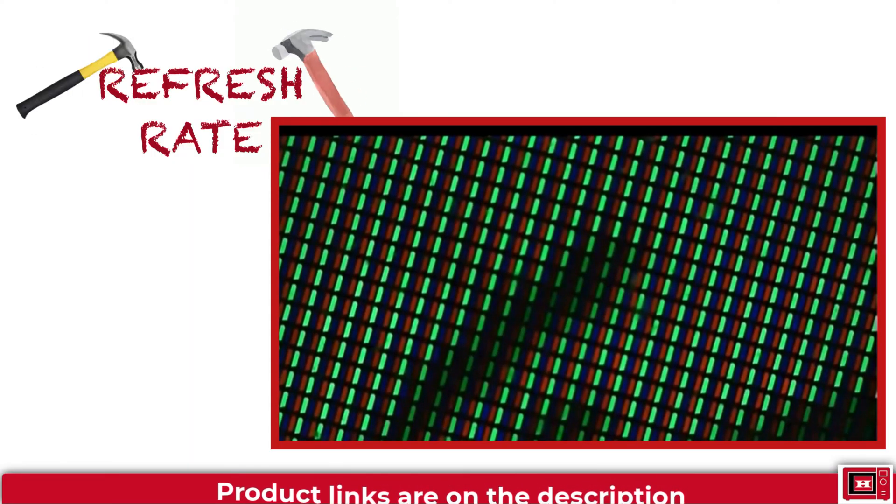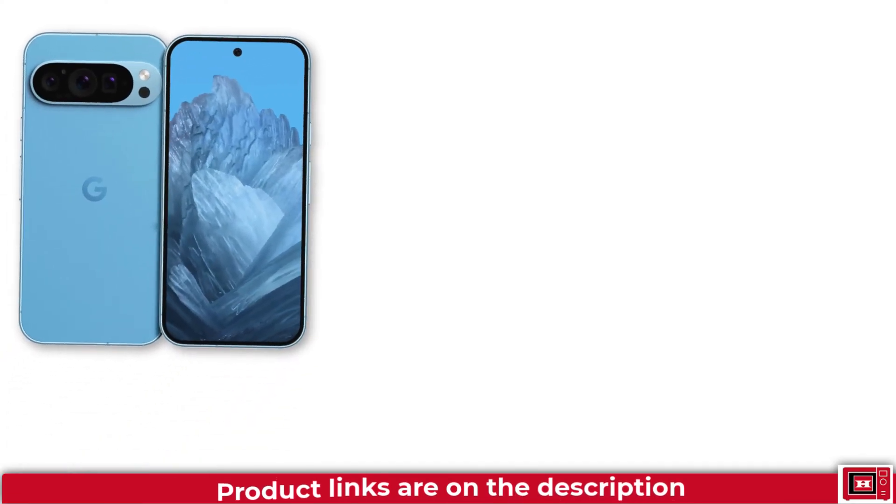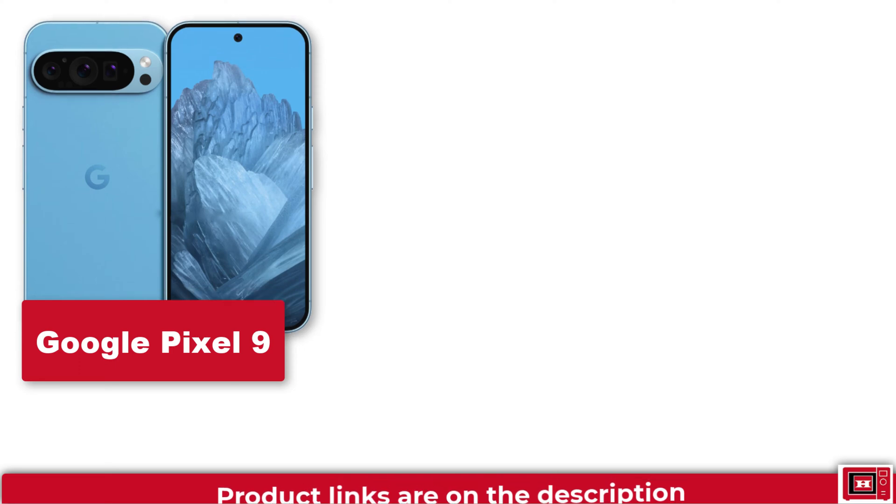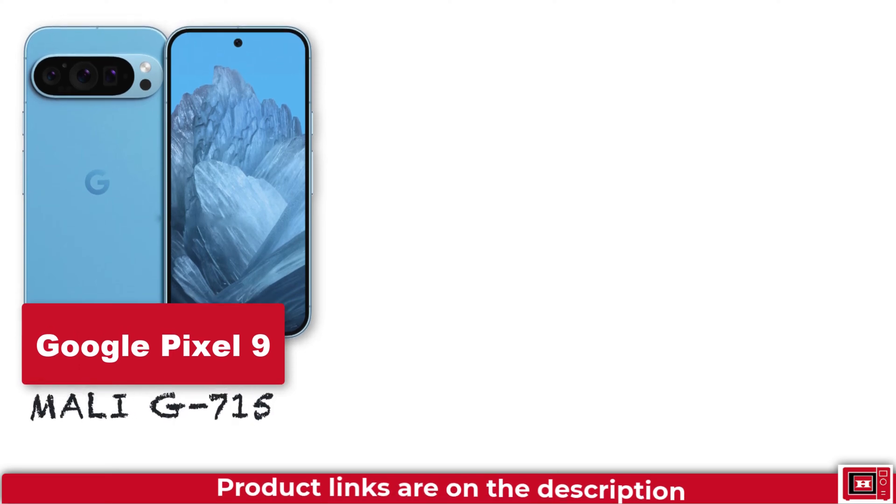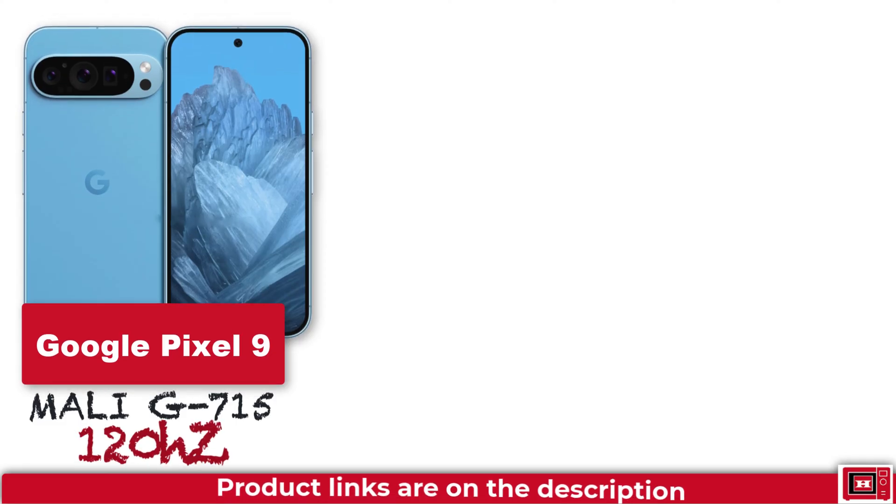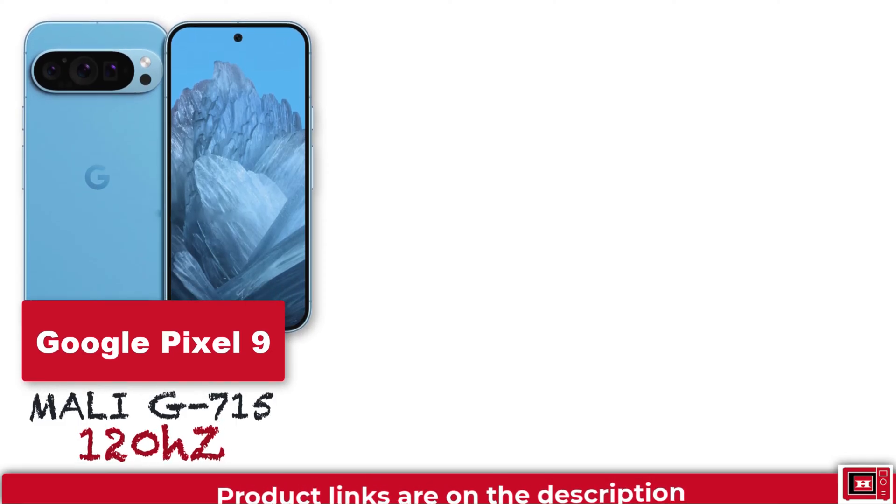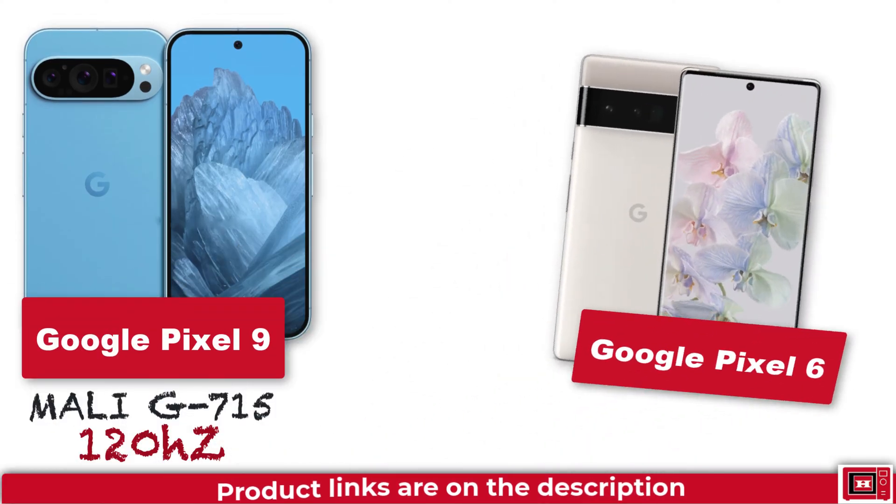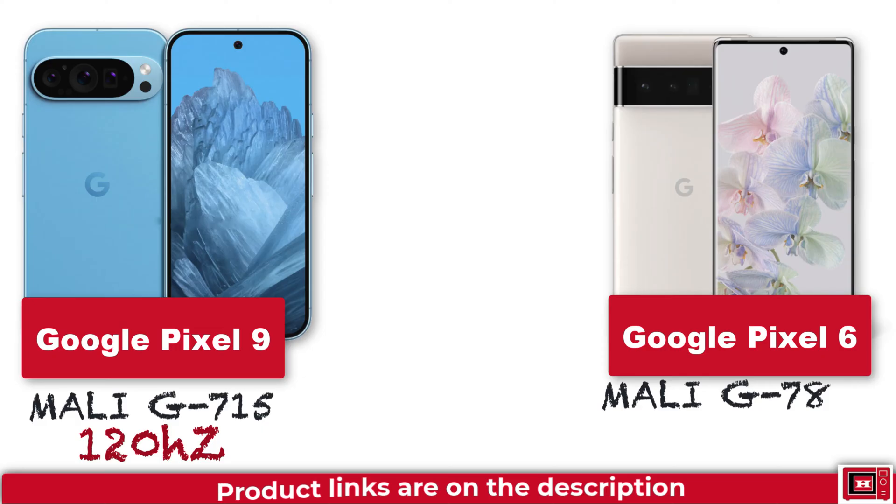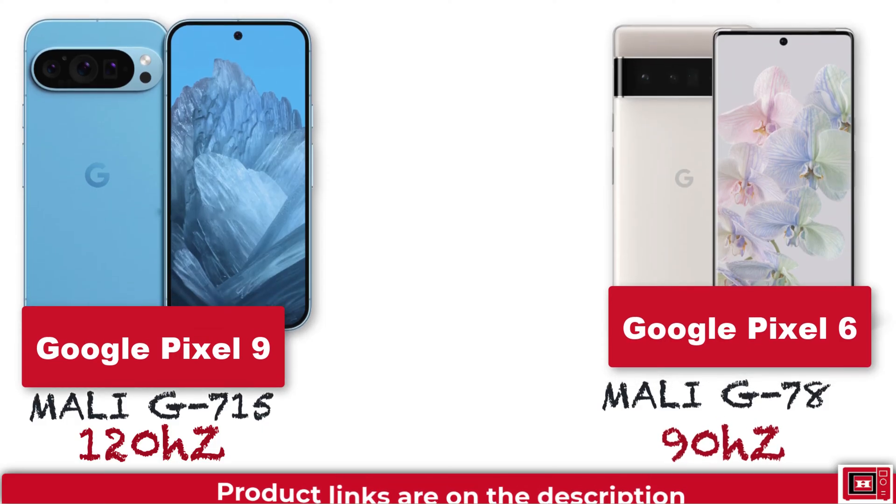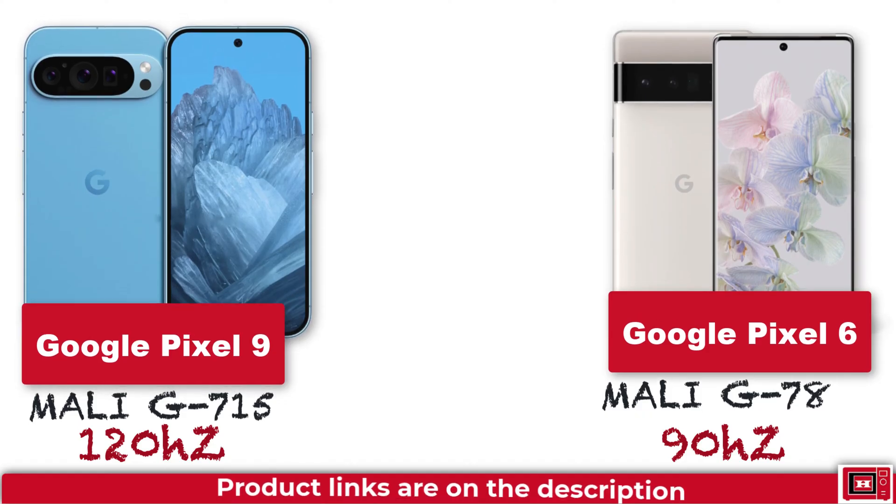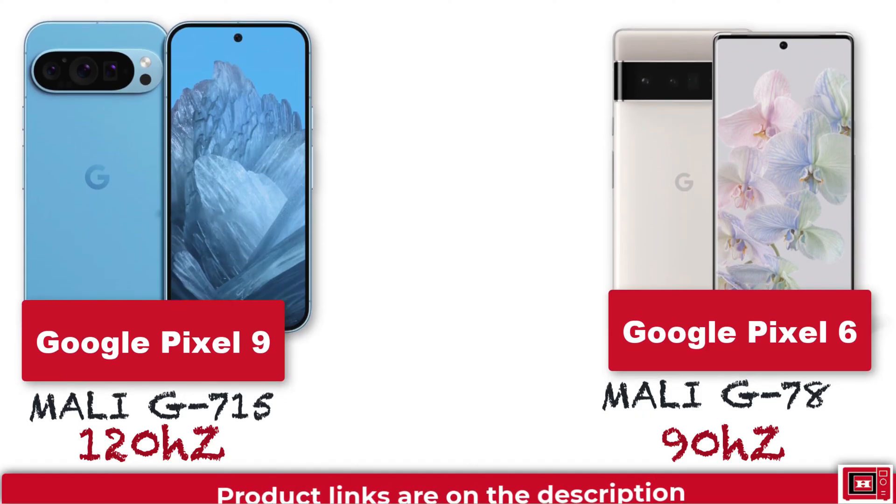Here's a practical example. If you bring let's say a Google Pixel 9, which has AMOLED display and has its TFT switches receiving command from the Mali G715 graphic processor, which all leads to a 120Hz refresh rate, and place it side by side with the older Pixel 6 having a Mali G78 graphic processor leading to a 90Hz refresh rate. Try scrolling real fast on both phones. You'd observe the Pixel 9 scrolls faster and smoother compared to the Pixel 6.